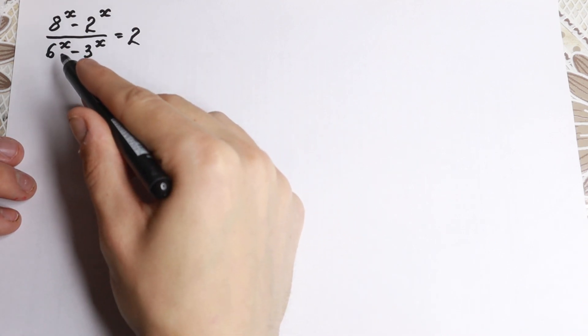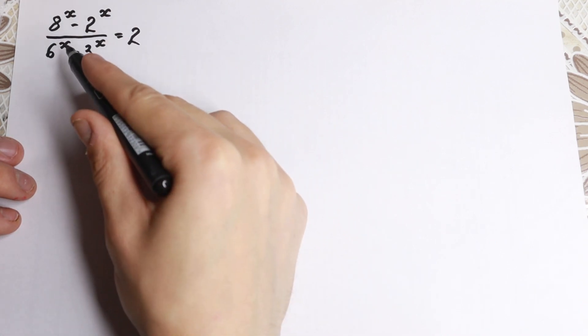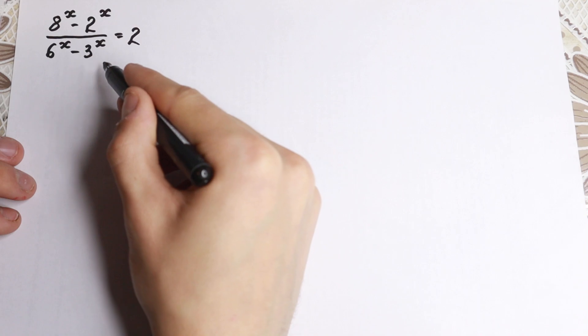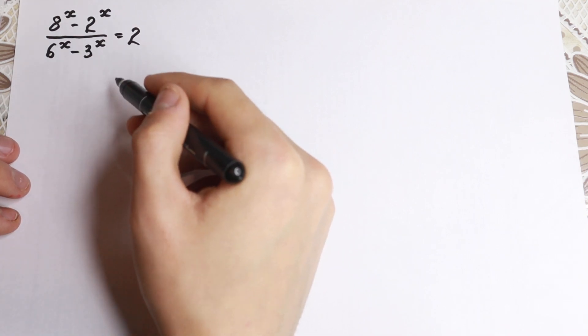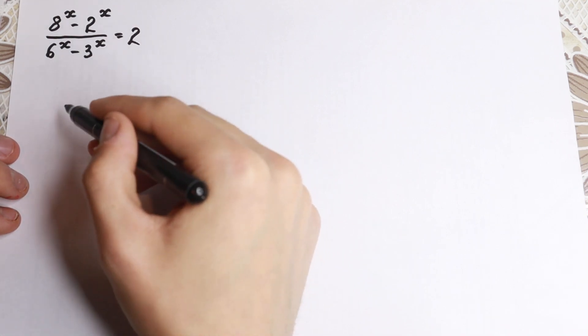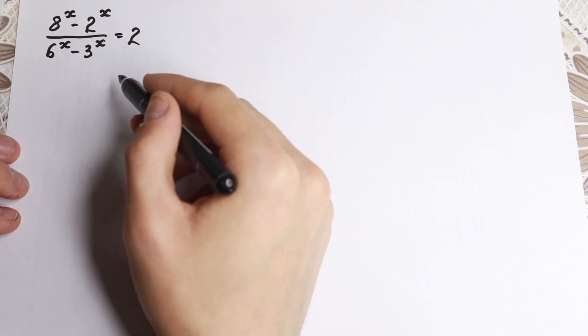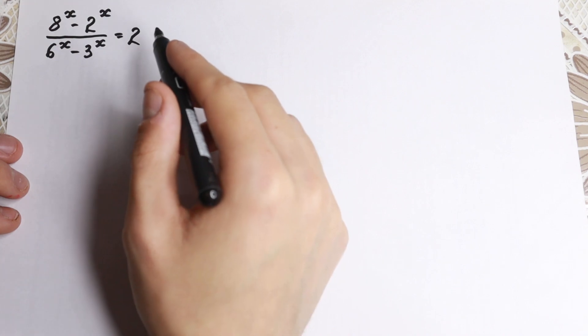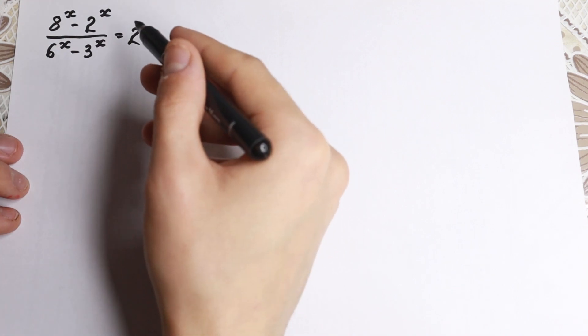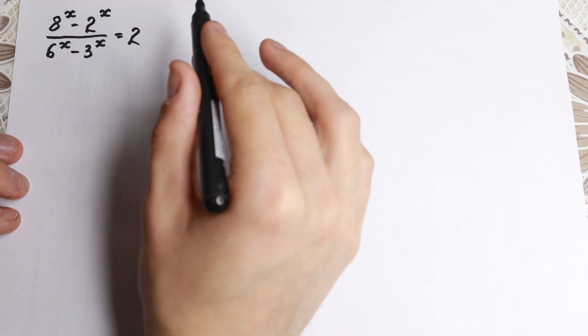First of all, we have all different bases: 8, 2, 6, 3, and equal to 2 on the right-hand side. It's really good to create the same base. But how can we do this? Let's try to create the same base, if it's possible of course.